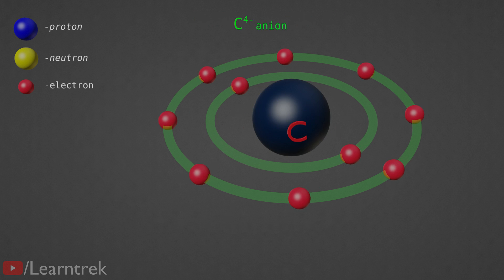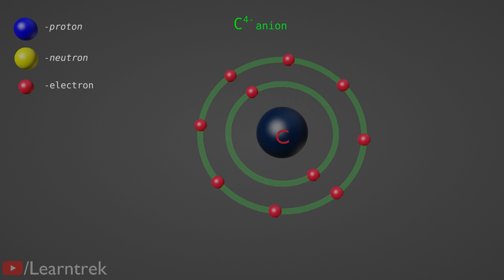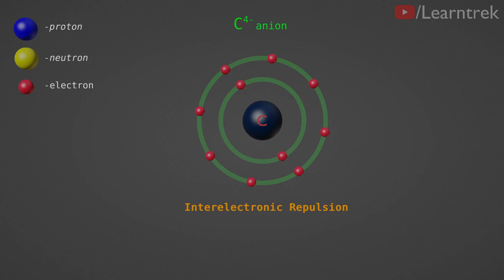Another reason for instability in carbon anion is inter-electronic repulsion. Inter-electronic repulsion is the repulsion between electrons, which increases after gaining 4 electrons. Increase in inter-electronic repulsion makes the carbon anion unstable and unable to hold 10 electrons.